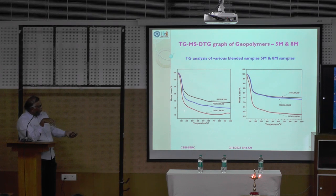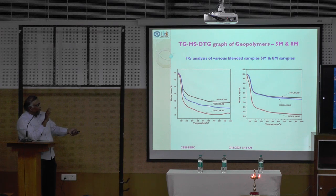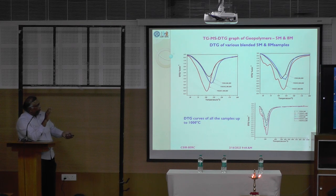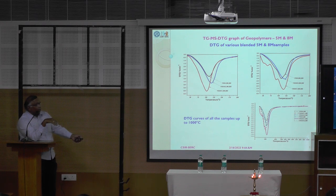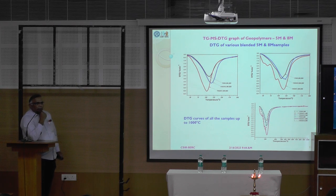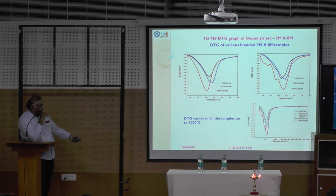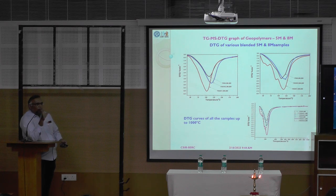Another tool: thermogravimetry, mass spectrometry, and differential thermogravimetry — we can get the reaction kinetics. Here, up to 200 degrees Celsius, whatever the hydrated products are getting decomposed, they are flying off. Beyond that, there is no reaction. So can I claim that geopolymer is good for thermal effects? Because nothing is happening to geopolymer concrete beyond 200 degrees centigrade. When a building fires, it may go up to 800 degrees. Only the reinforcement will get affected; otherwise, as such, geopolymer concrete will not get affected. That is what I have claimed based on this study.